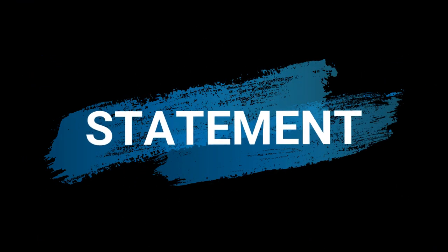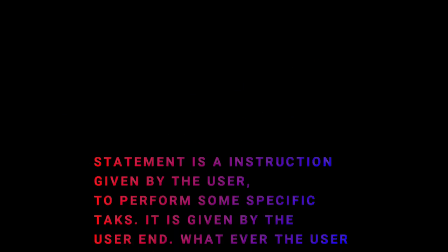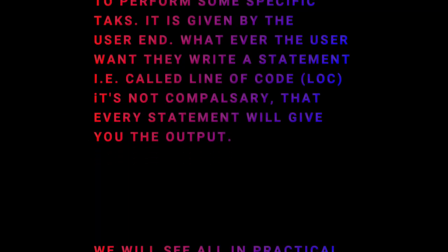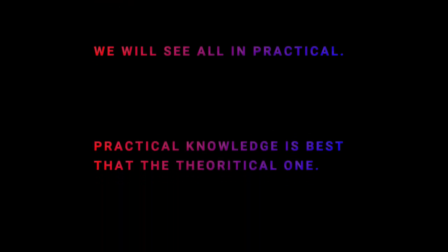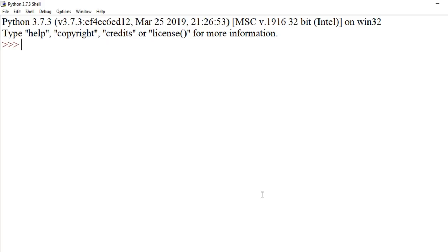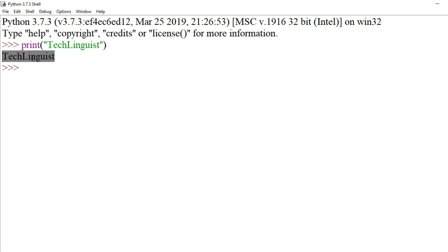What is a statement? A statement is an instruction given by a user to perform some specific task. Let's see this practically in the Python shell. Here we write a print statement: print('Tech Linguist'). The print function is a predefined function, and this is called a statement. When we press enter, we get the output — whatever is written inside the function is displayed.